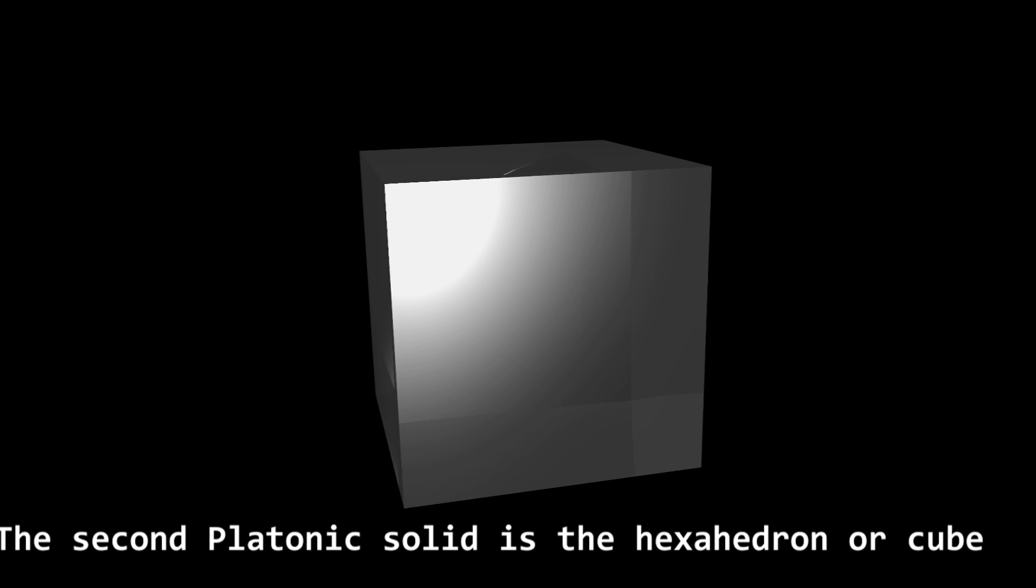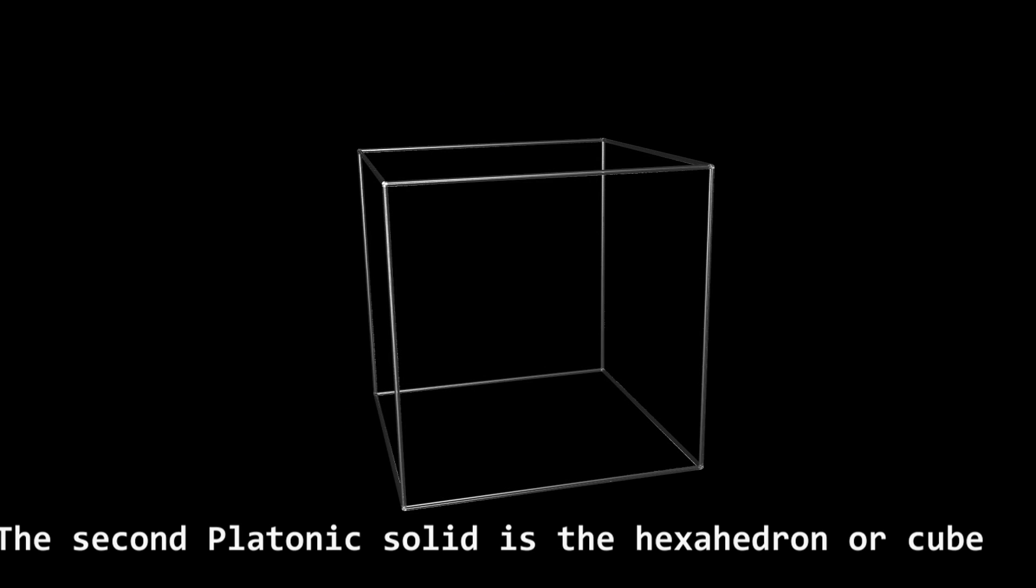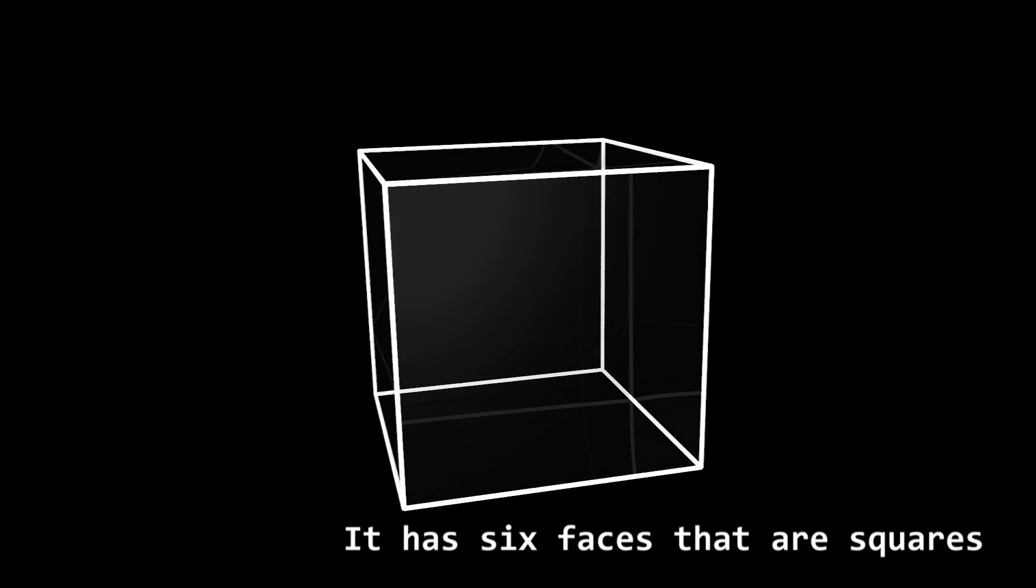The second Platonic solid is the hexahedron or cube. It has 6 faces that are squares.